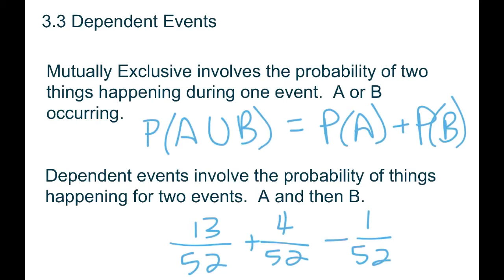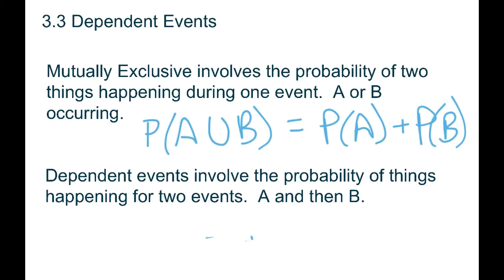That was the only thing to be aware of with mutually exclusive. What we're moving on to today is a little bit different — we're looking at whether things are independent or dependent. Instead of one thing happening at a time, we look at two events. For example: I draw a heart, then take another card and draw a heart again. The key thing we're looking at is the word 'and.'